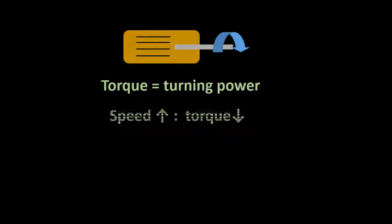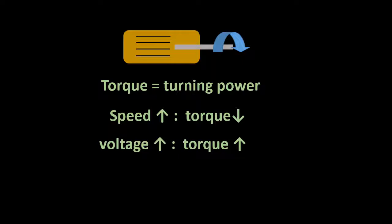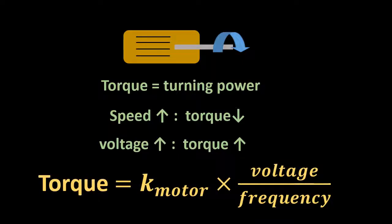A motor's torque is its rotational power. Motor torque will decrease with increasing speed, and increase with increasing voltage. Stated as an equation, we have torque equals K times voltage over frequency, where K is a constant for that particular motor.